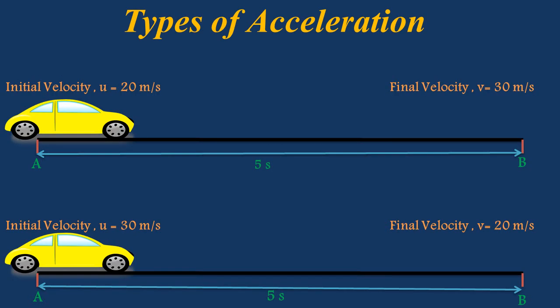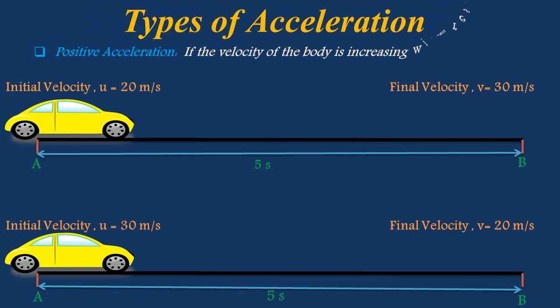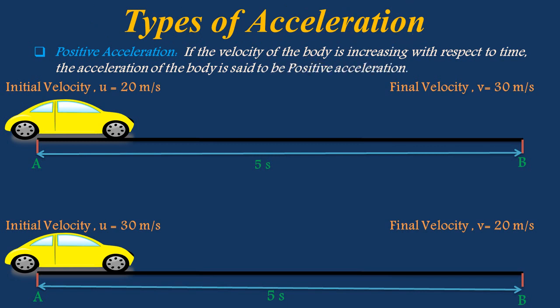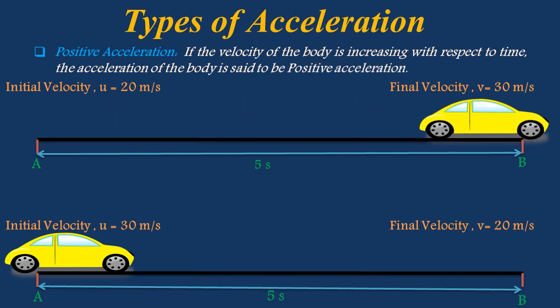Now let's discuss about various types of acceleration with examples. If the velocity of the body is increasing with respect to time, then the acceleration of the body is said to be positive acceleration. Consider a car moving initially with a velocity of 20 meter per second that takes 5 seconds to reach the final point with a final velocity of 30 meter per second. Then acceleration is said to be positive acceleration, as there is an increase in velocity from 20 meter per second to 30 meter per second.